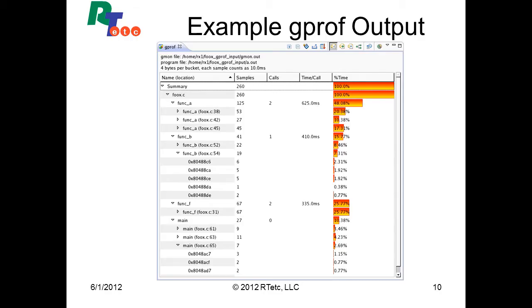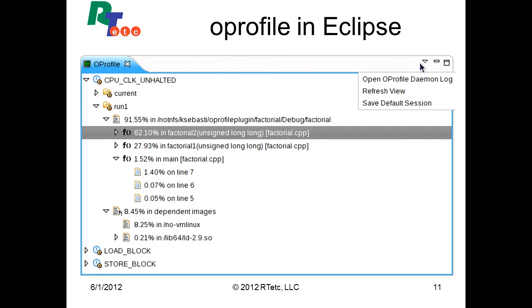Once we cover the development of root file systems and the Linux boot process itself, we can cover more advanced topics involving testing and monitoring of the application when it is in execution. Through methods such as tracing and profiling with tools like GPROF and OPROFIL, we're allowed to get better insight into the performance aspects of the embedded Linux system while in operation, without intruding too much into the application as would be required during a full remote debug.